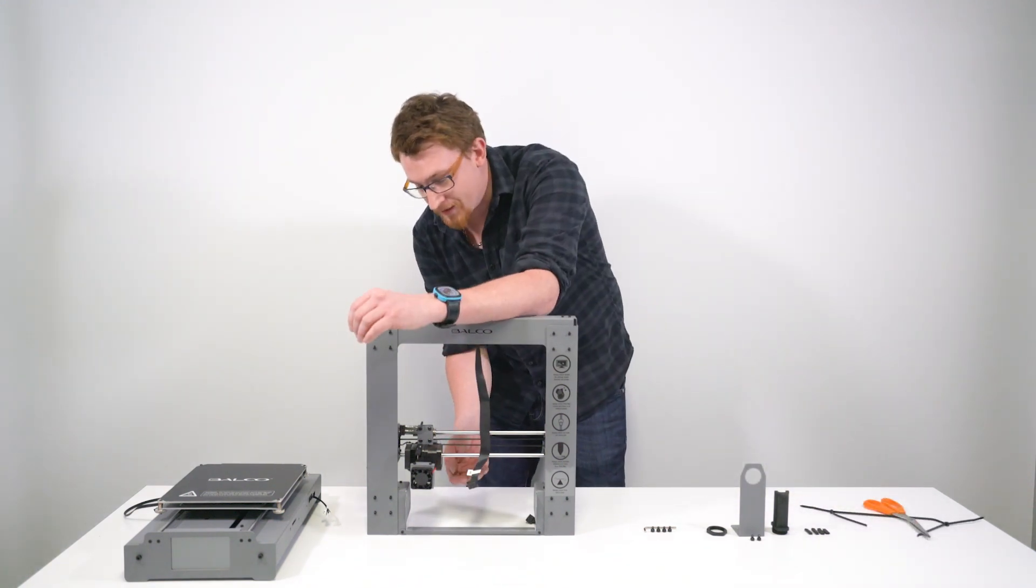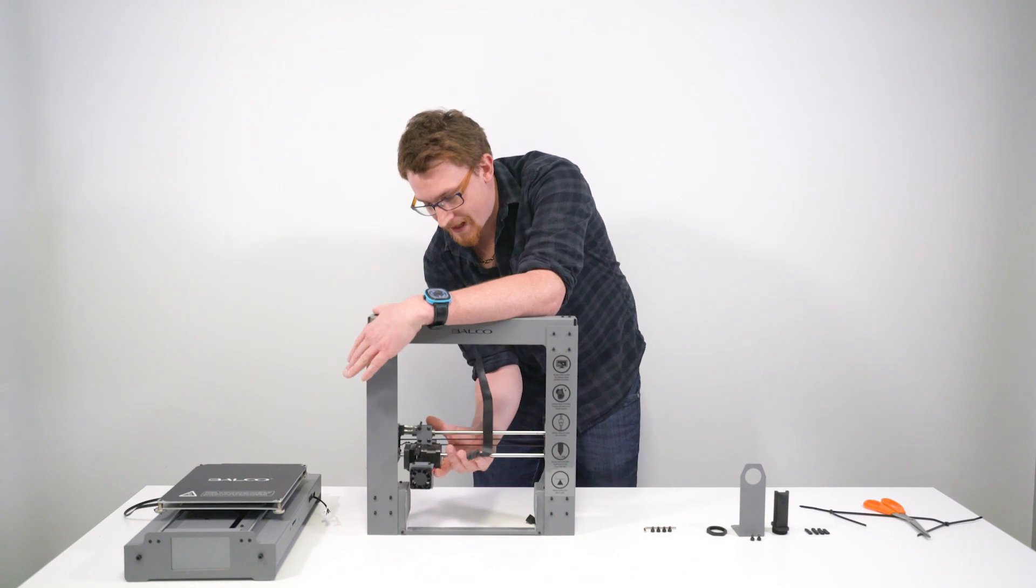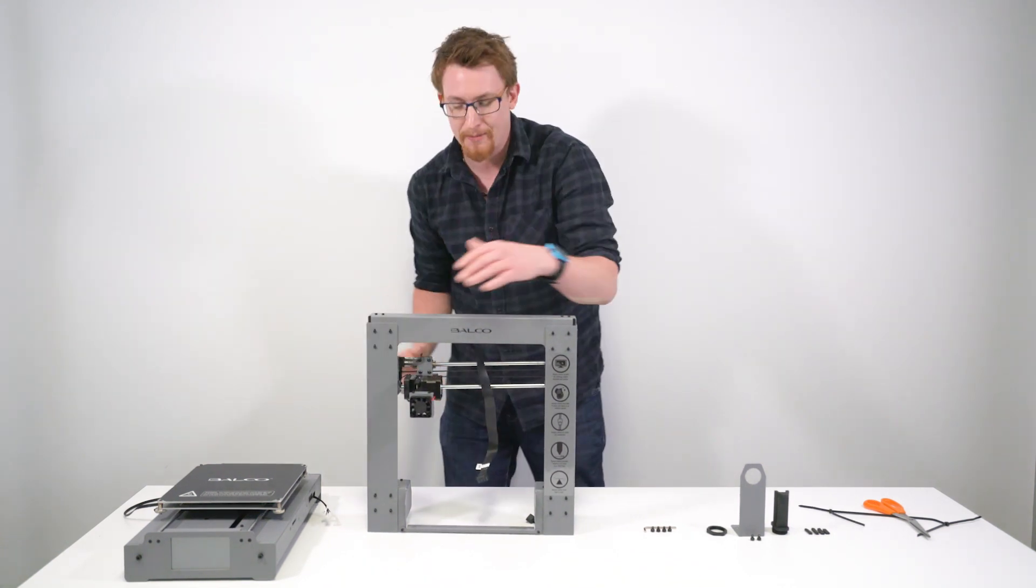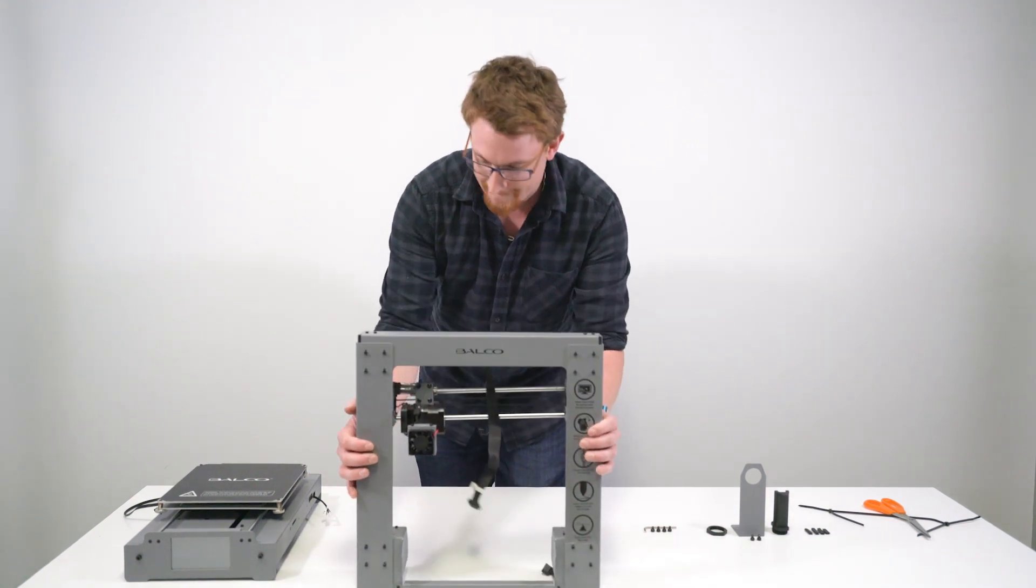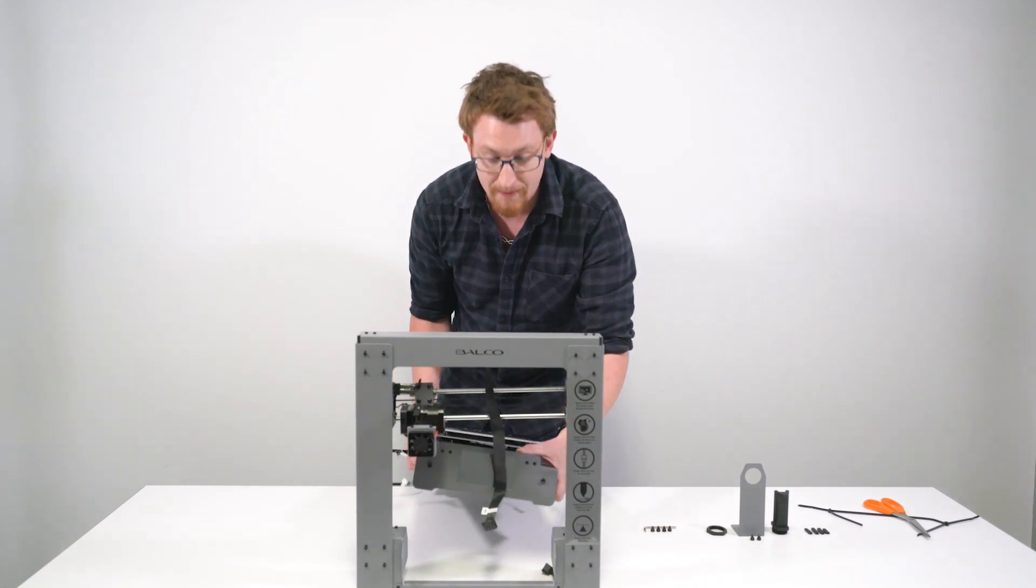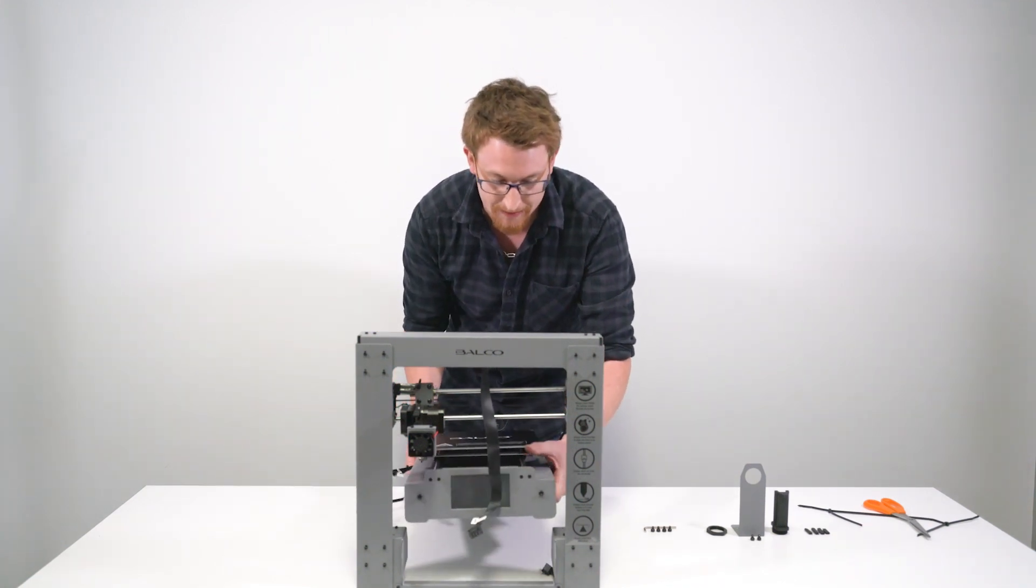Now what you're going to want to do to give yourself enough space to get the base in is lift the gantry up. Now it's a bit stiff, just push it all the way up there so you've got yourself a bit of room. Now what we're going to do is bring the bed through the front here. Make sure the screen's going in like so.